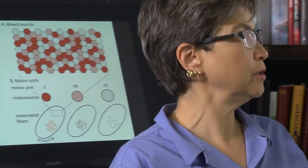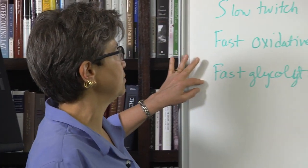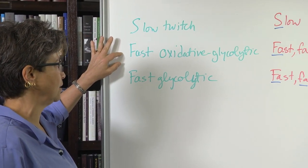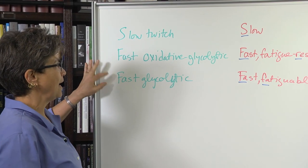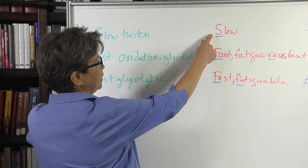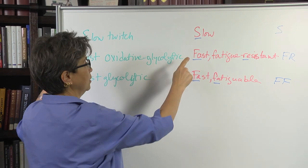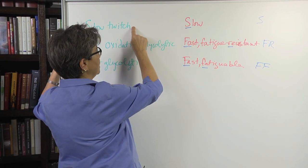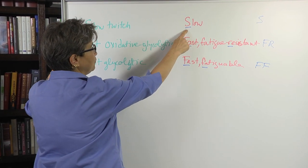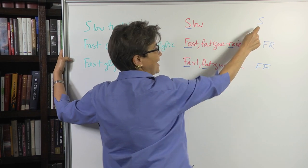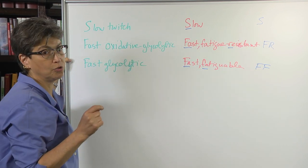So if we go over to the board, here are the muscle fiber types: slow twitch, fast oxidative glycolytic, and fast glycolytic. And they get pledged to one type of motor neuron, a slow motor neuron in the case of slow twitch, and we will abbreviate that slow motor neuron as an S. Those are S motor neurons.